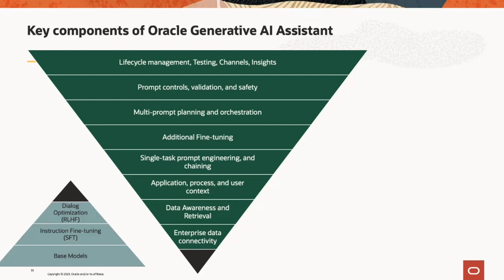Then on top of that is dialog optimization using reinforced learning from human feedback (RLHF). That layer allows humans to use a ranking system to look at all possible outputs from the base model and determine which answers are reasonable. A famous example: 'When Christopher Columbus landed in the new world in year 2015, what is the first thing that he saw?' That answer doesn't make sense — the reinforced learning human feedback eliminates such nonsensical answers.